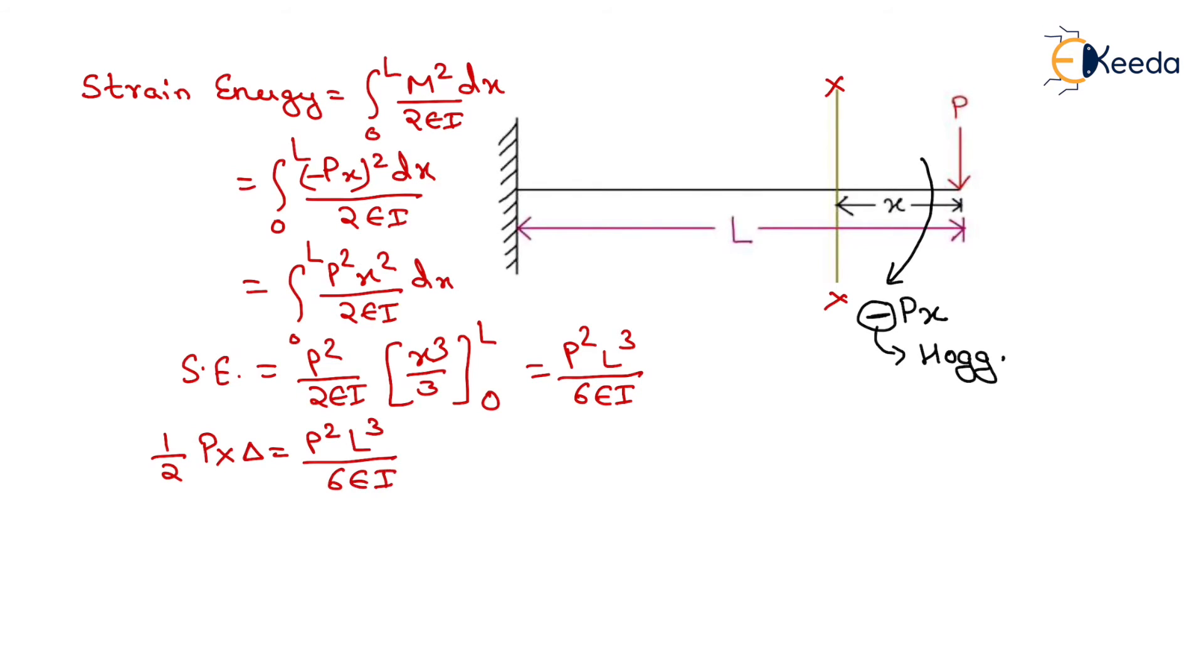After solving this, we will get delta equals to P L cube upon 3EI.